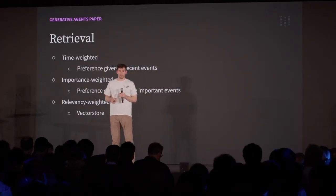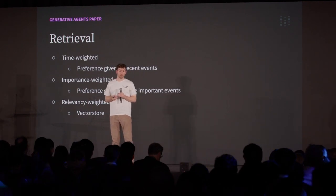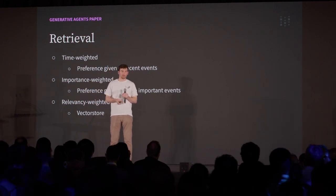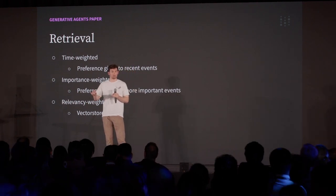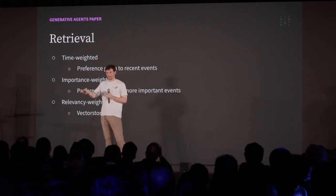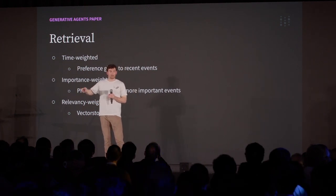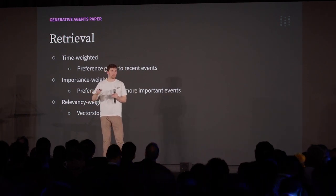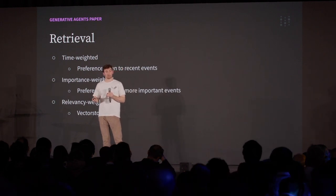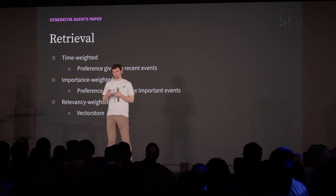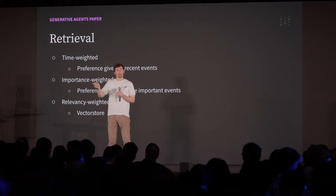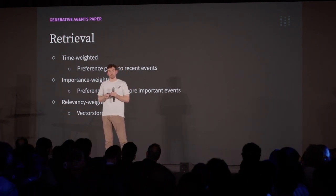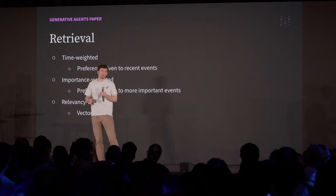How they did retrieval is really interesting — a three-pronged approach. They weight more recent memories higher, which makes sense and is very similar to human memory. They weight by importance — I remember my birthday better than a random breakfast I had years ago. And then they weight by relevancy, looking up based on semantic similarity to remember similar events. They combine all these, and importantly they're doing this not just on individual observations but also on the reflections they made. Through this process they retrieve observations and reflections and insert them into the prompt for the agents.